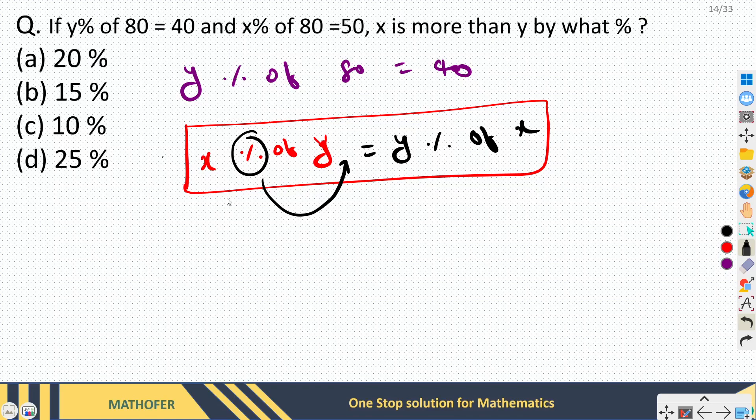Both are the same because we can rewrite this as x upon 100 times y, which will be xy by 100, and we can rewrite this as y by 100 times x, which will again be xy by 100. So both give us the same values.